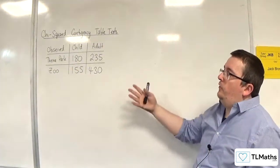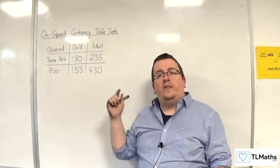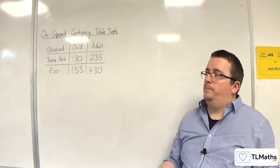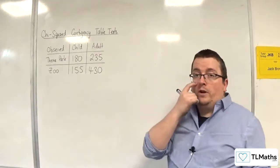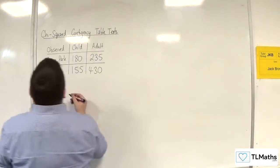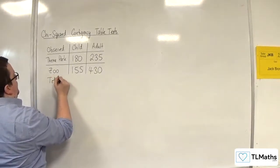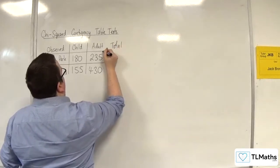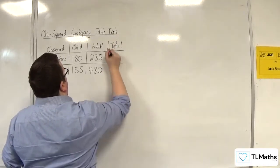Now, this is what we refer to as the observed table. So these are the values that we have observed, we've gone out, we've collected this data. Now, what you're going to need for this are the total column and the total row. So we're going to have the total and the total, so extend that table out.